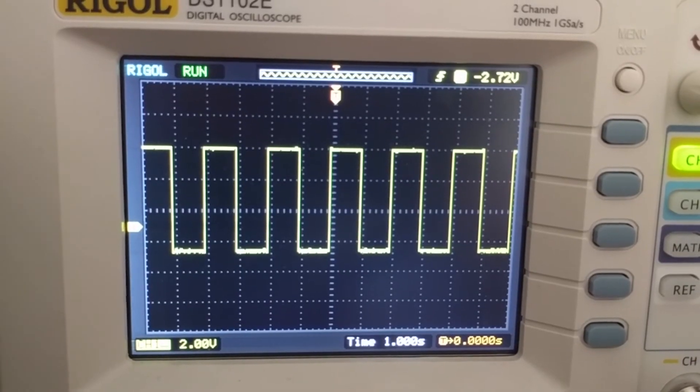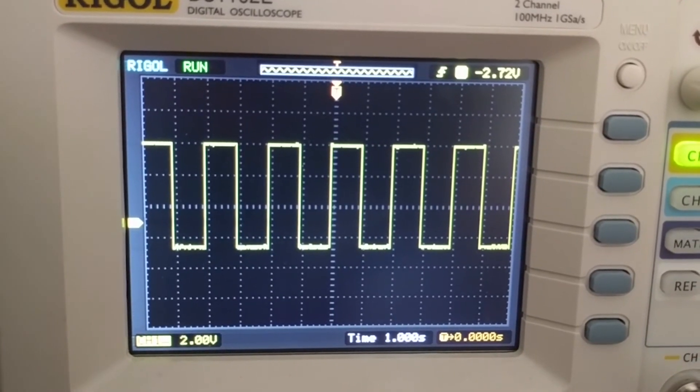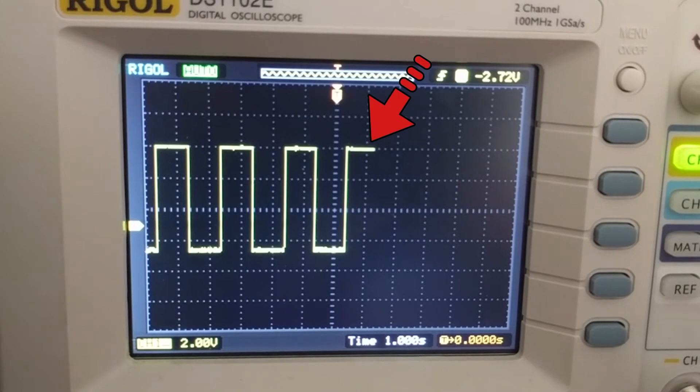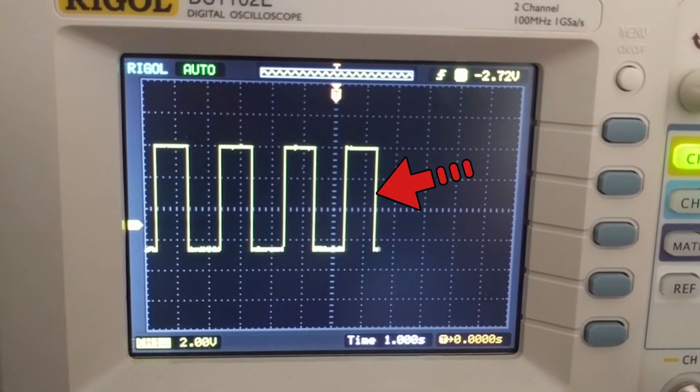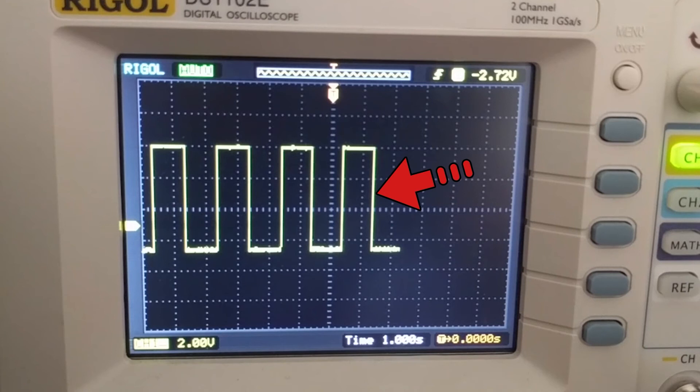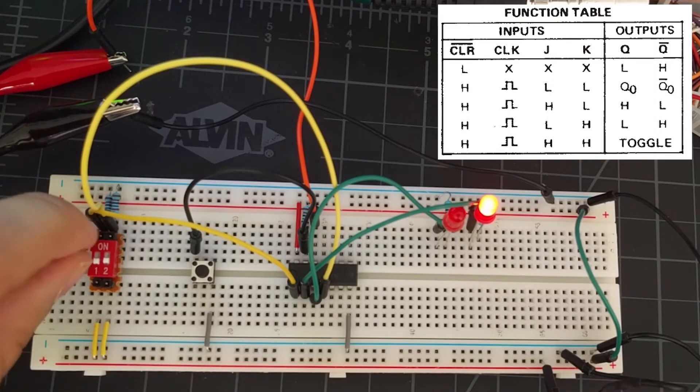Now, here's how the clock signal is going to work. At the positive waveform right here, the chip will take in our J and K inputs from the switch. Then, when our clock signal transitions from high to low, the corresponding output state, which can be found from the truth table, will be outputted to Q and Q-bar. Let's demonstrate this.